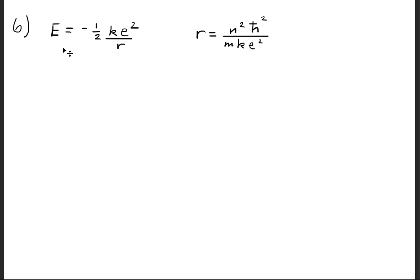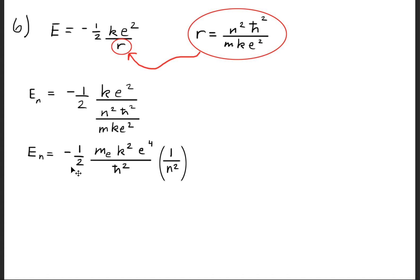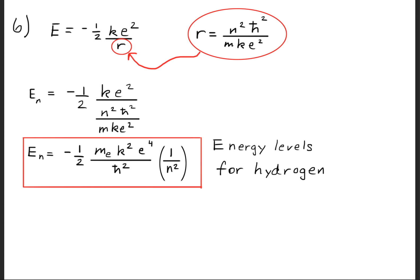Recalling that the energy equals negative one-half times k times e squared over R, we substitute the Bohr radius in for R. Adding the subscript n for energy levels and simplifying, we get that the energy equals negative one-half times the mass of the electron times the Coulomb constant squared times the elementary charge to the fourth power, divided by h-bar squared, times one over n squared. These are the energy levels for hydrogen.